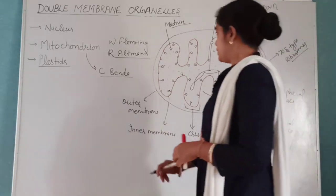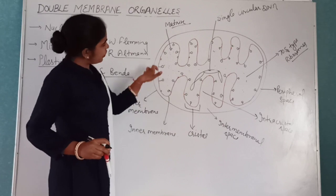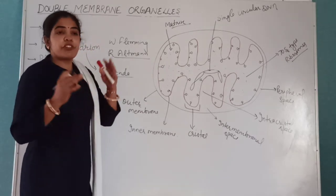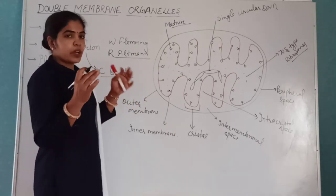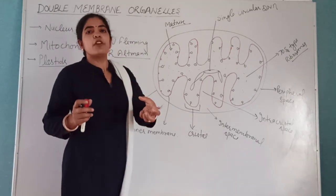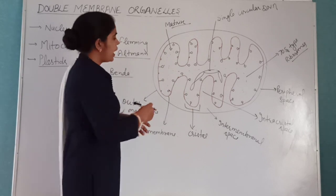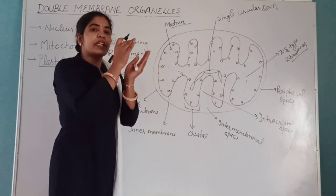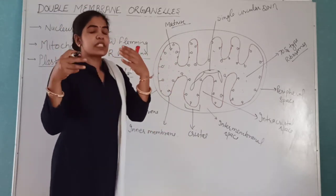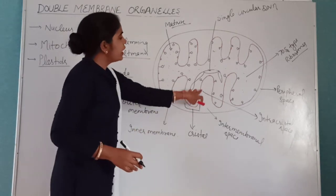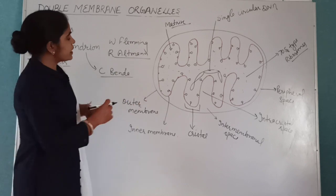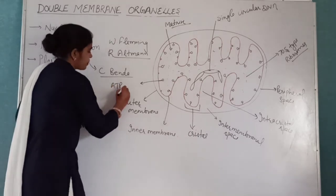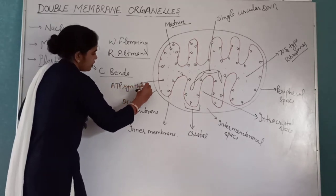The foldings of the inner membrane, called cristae, contain enzymes for aerobic respiration — different complexes for the electron transport chain and Krebs cycle are present in the inner membrane of mitochondria. ATP synthase enzymes are also present here, also called oxysomes.